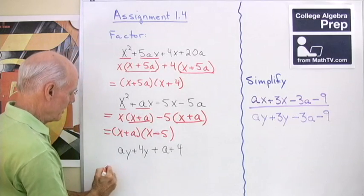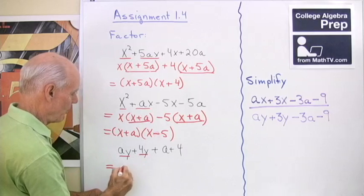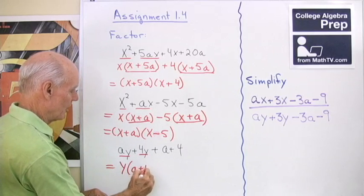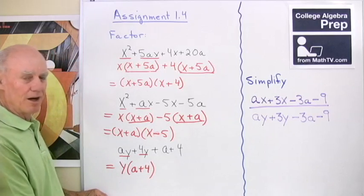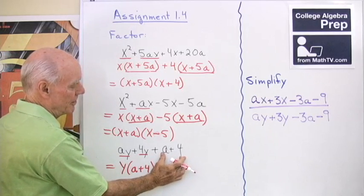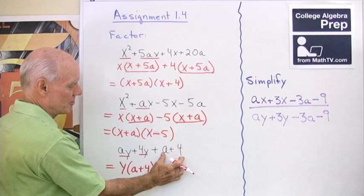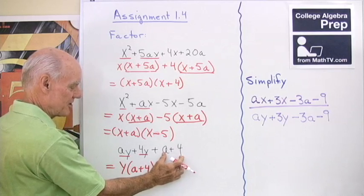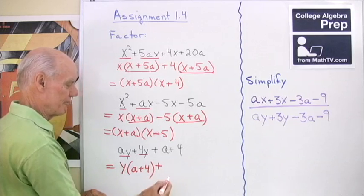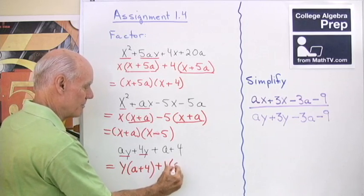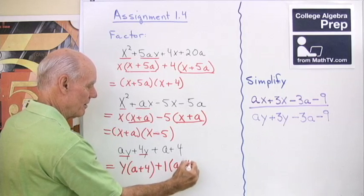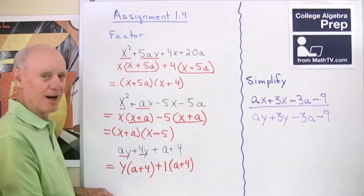One more problem, let's look here. First two terms have a y in common, so I'll take that out in front. What's left is a plus 4. There isn't anything common to these two terms other than 1, but I see that that's a plus 4, so how would you feel if I wrote this as 1 times a plus 4? That doesn't change this at all, right?